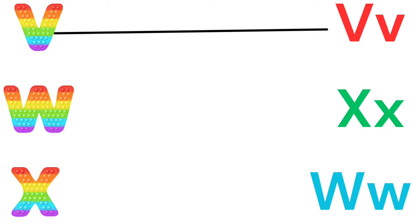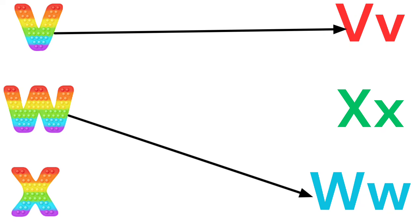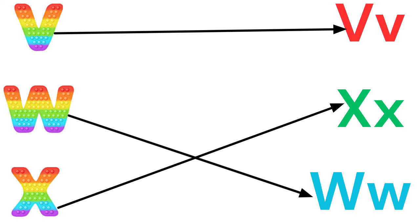V for vase, W for watermelon, X for xylophone.